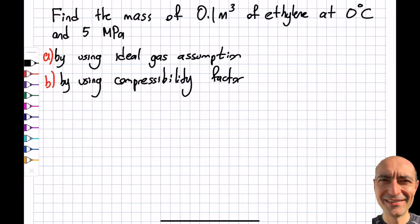Let's do an example to illustrate how to use the ideal gas law as well as incorporate the compressibility factor to get a more accurate result. It's a simple question asking for the mass of a given volume of ethylene at zero degrees Celsius and five megapascals.